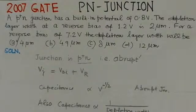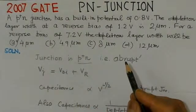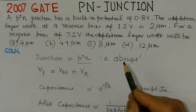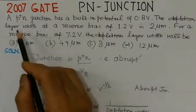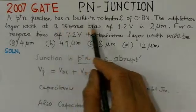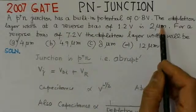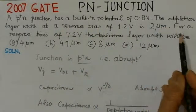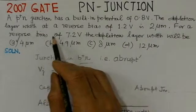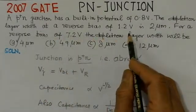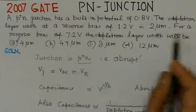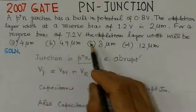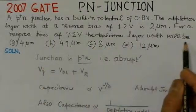The first problem is from GATE 2007. It states that a P-plus-N junction has a built-in potential of 0.8 volts. The depletion layer width at a reverse bias of 1.2 volts is 2 micrometers. For a reverse bias of 7.2 volts, the depletion layer width will be?